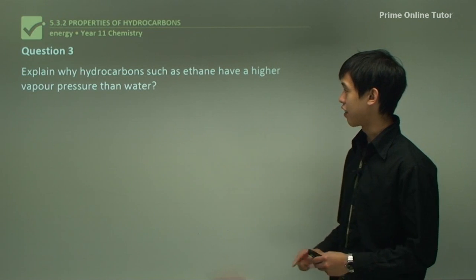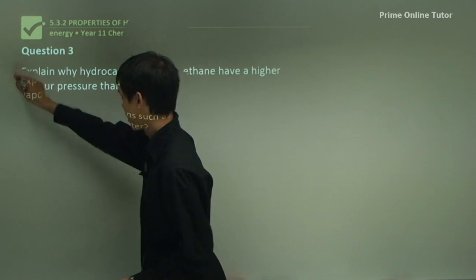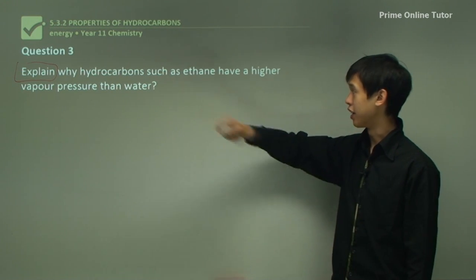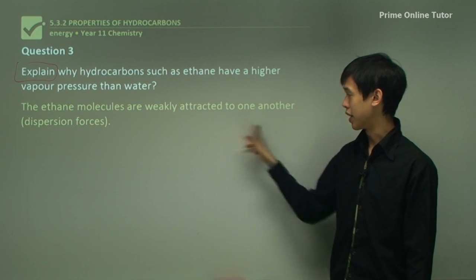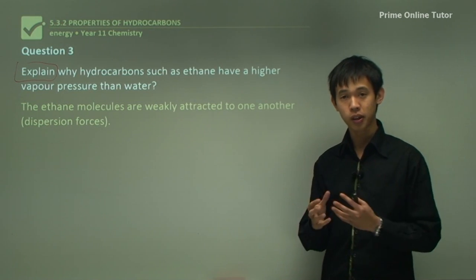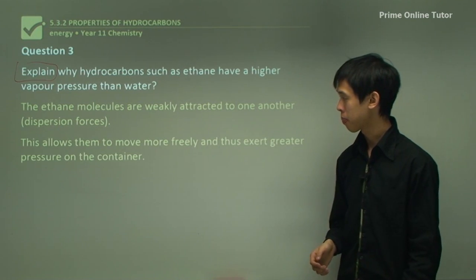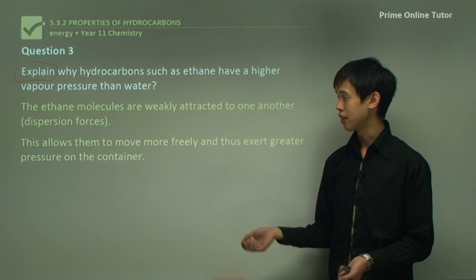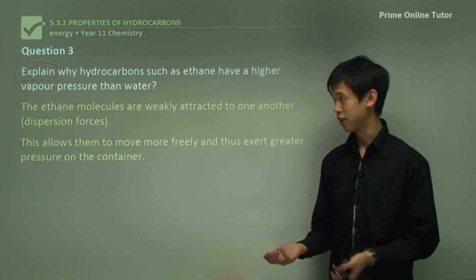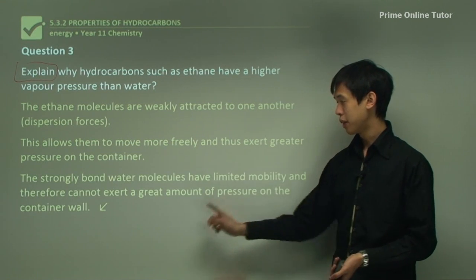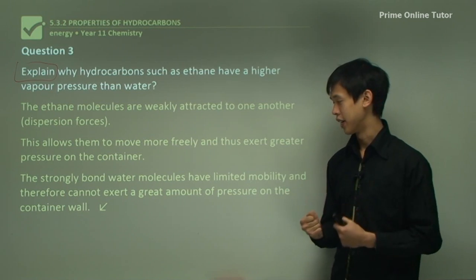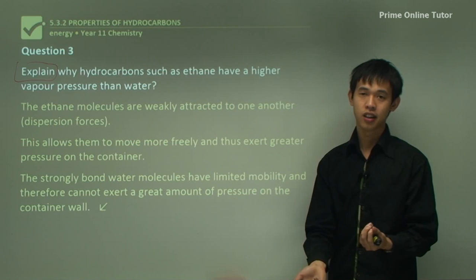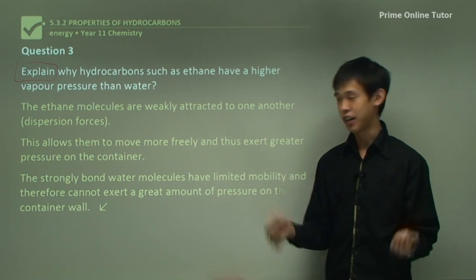Question three: explain why hydrocarbons such as ethane have a higher vapor pressure than water. The cause is that ethane molecules are weakly attracted to one another — they have very small dispersion forces because ethane is quite a small molecule with no dipoles or hydrogen bonds. This allows them to move more freely and exert greater pressure on the container. For a given temperature, there'll be more gas molecules of ethane than water, so they collide with the walls more frequently, giving greater pressure. By contrast, the strongly bonded water molecules have limited mobility — they can't escape to the gas phase and therefore cannot exert much pressure on the container wall.